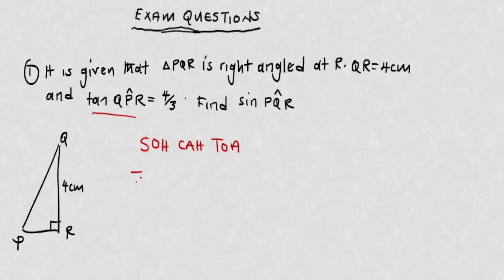Since we have tan here, I'm going to say tan is equal to opposite over adjacent. They've given it to be 4 over 3, so tan equals 4 over 3.